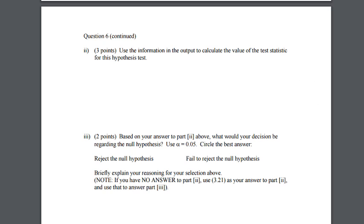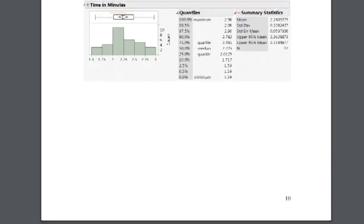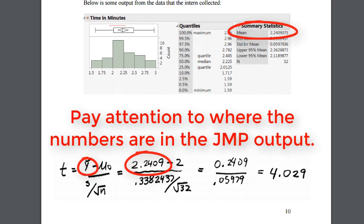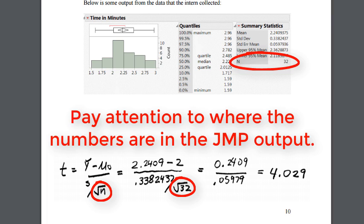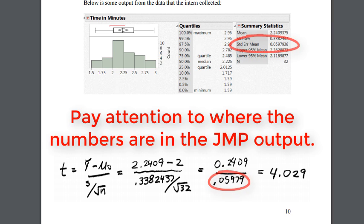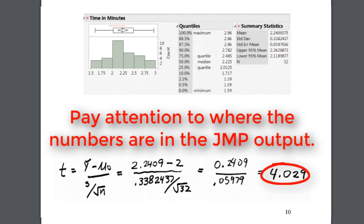With the information on our output we can calculate the test statistic. Take our sample mean of 2.24 minus our hypothesized mean of 2, and then divide it by the standard error of the mean, which we can find by doing 0.33824 divided by the square root of 32, or we can use the output 0.0597. When we do this we will get a t statistic of right about 4.